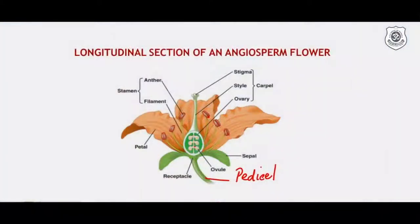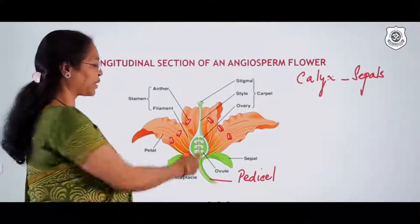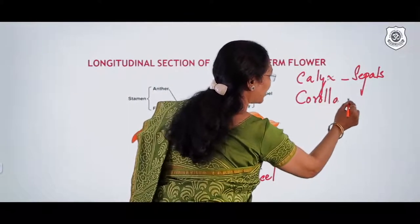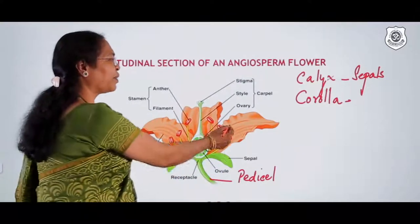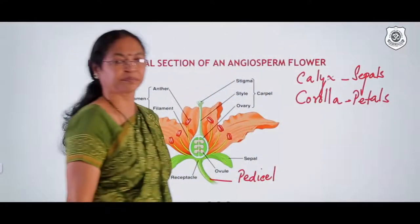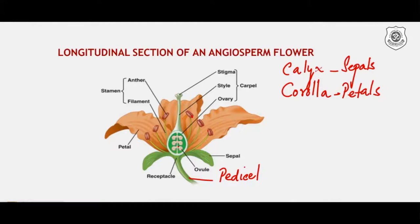The first whorl is called the calyx. Calyx is the outermost whorl and comprises a large number of sepals. Sepals are green and protect the flower in bud condition. The second whorl is called the corolla. Corolla is made up of a large number of petals, which are brightly colored.